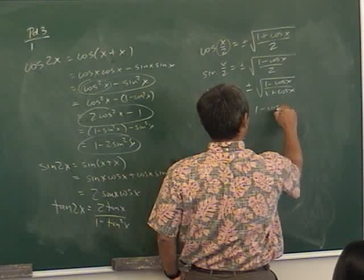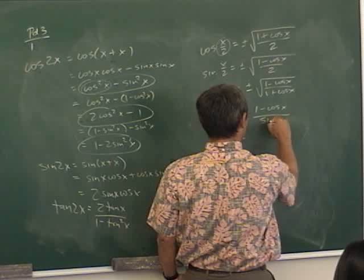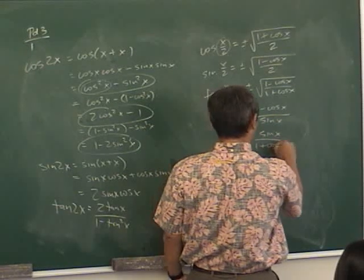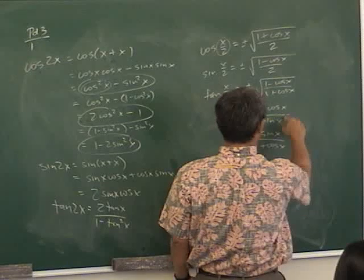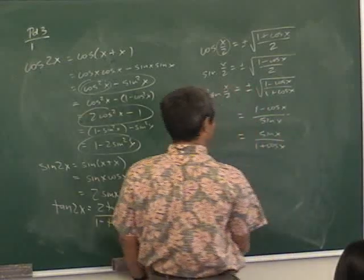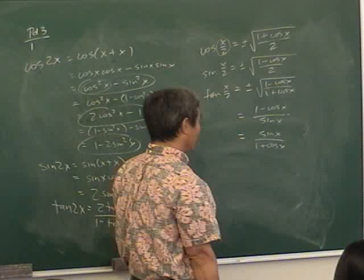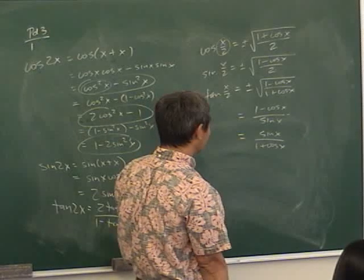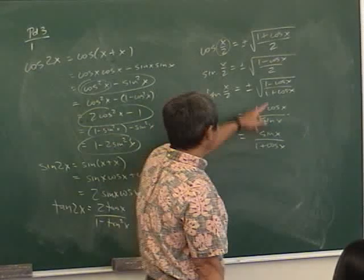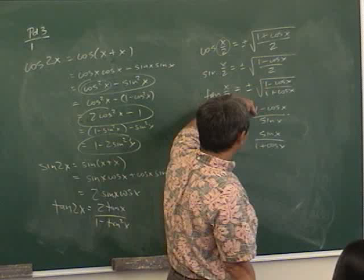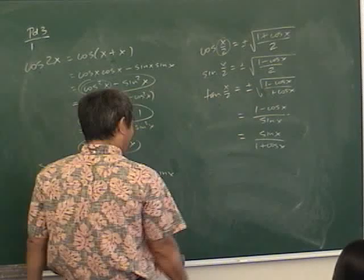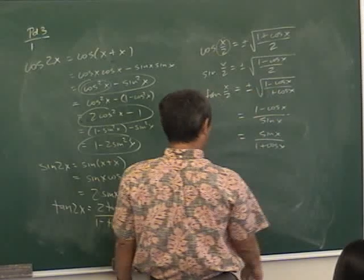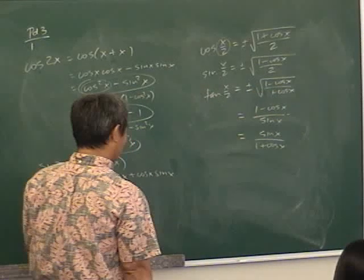On the identity sheet, there are also two more forms for tangent(x/2): (1 − cosine x)/sine x and sine x/(1 + cosine x). These are equal to each other — you can show that by multiplying by the conjugate. The plus-or-minus versions of the tangent half-angle aren't needed for B and C because you don't need them in those forms.